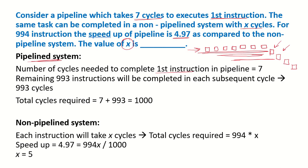The 1st instruction in the pipeline system will require 7 clock cycles, which is given. The remaining 993 instructions (out of 994 total) will be completed in every subsequent cycle, requiring 993 cycles. In a pipeline system, the total number of clock cycles required will be 7 plus 993, which equals 1000.